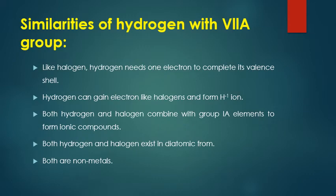Now the last comparison — with Group 7A, the halogens: fluorine, chlorine, bromine, iodine. First similarity: hydrogen needs one electron to complete its valence shell, and halogens also need one electron to complete their outermost shell. Second: hydrogen can gain an electron and form a hydride ion (H⁻), just as halogens gain electrons to form halide ions. Third: both hydrogen and halogens combine with Group 1A elements — for example NaCl, HCl, HF. Fourth: both exist as diatomic molecules — H₂, F₂, Cl₂. Fifth: both are non-metals.